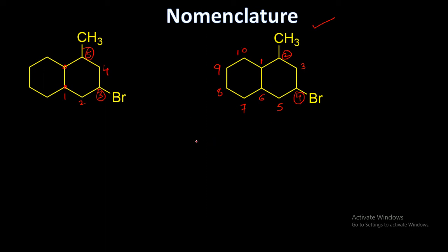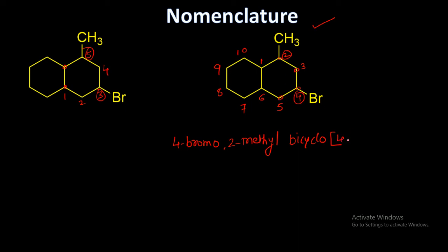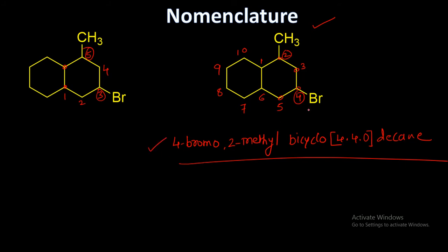Continuing the numbering, here it will be nine and ten. We put substituents first in alphabetical order, so we write: 4-bromo-2-methyl, then bicyclo — in square brackets, both rings are the same so one-two-three-four, four atoms on each side of the fused junction, which gives zero, and there are ten atoms total — so the suffix is decane. This is the final IUPAC name for this structure.